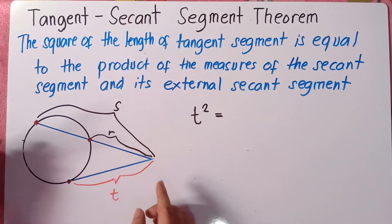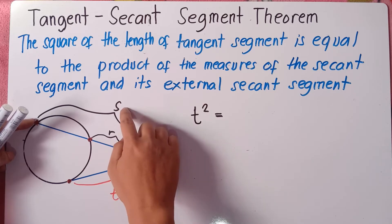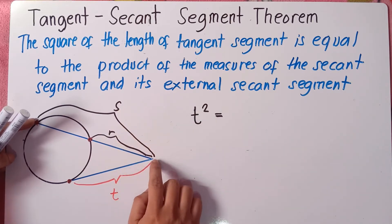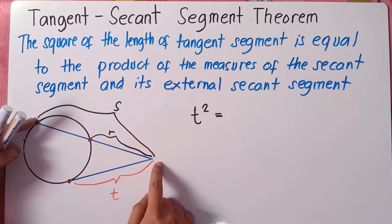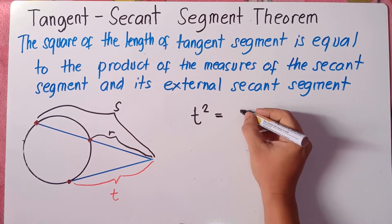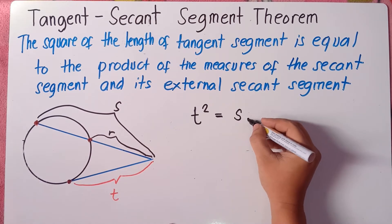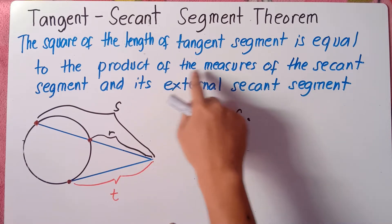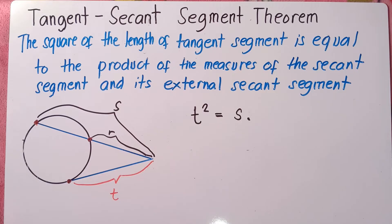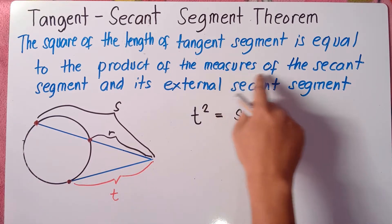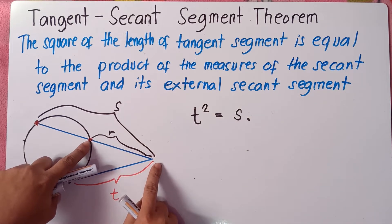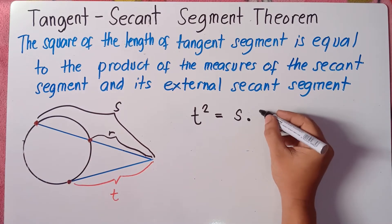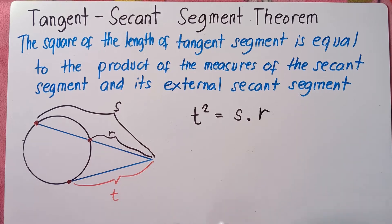The secant segment is represented as s, and since this is a product, we need to multiply by the external segment r. So the full equation is: t squared equals s times r — the secant segment multiplied by its external segment.